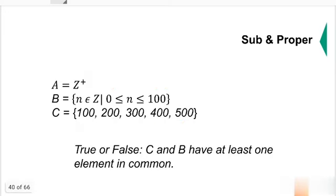C and B have at least one element in common. What's that element? What's the common element between B and C? Again, B is 0, 1, 2, 3, up to 100. So 100 is the common element.